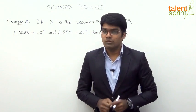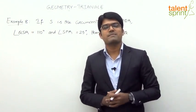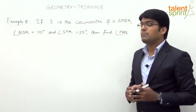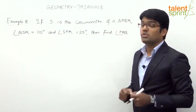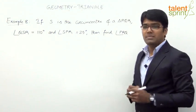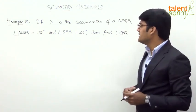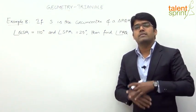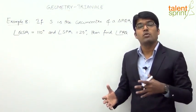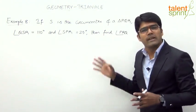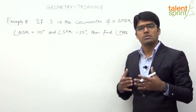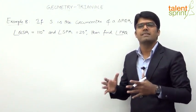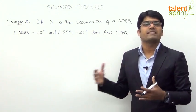Let us now take Example 8, which is also based on the concept of circumcenter. If S is the circumcenter of a triangle PQR where angle QSR is 110 degrees and angle SPR is 25 degrees, then find angle PRQ. We will try to solve this question without writing any steps on paper — we will draw the diagram, consider the circumcircle, and find the required angle.